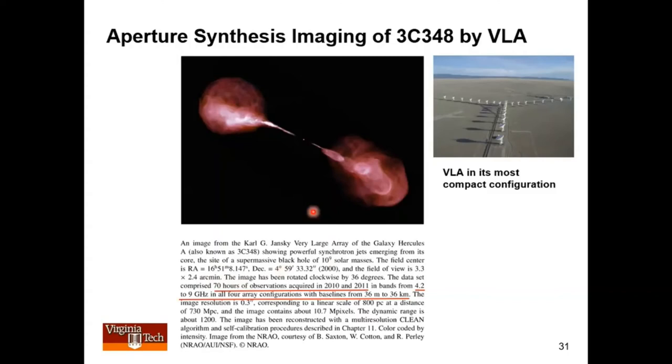So the data set that was required to produce this intensity image, that was 70 hours of observations, not all done at once. They all had to be done over many, many times. From 4.2 to 9 gigahertz, over an entire frequency range. Not the whole frequency range at once, but using a big fraction of that entire range at different times. And then putting this all together to get this extraordinary resolution of just 0.3 arc seconds. Just remarkable.